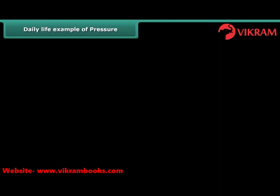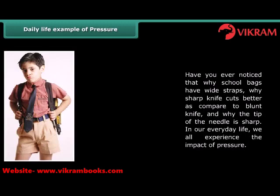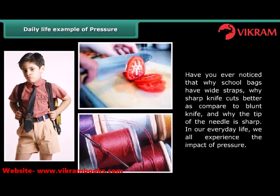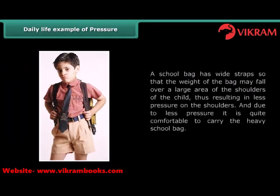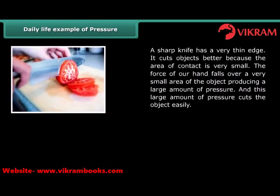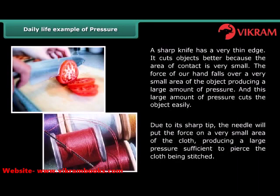Daily life examples of pressure. Have you ever noticed why school bags have wide straps? Why does a sharp knife cut better compared to a blunt knife? And why is the tip of a needle sharp? A school bag has wide straps so that the weight of the bag may fall over a large area of the shoulders, resulting in less pressure and making it comfortable to carry. A sharp knife has a very thin edge and cuts objects better because the area of contact is very small, producing a large amount of pressure that cuts the object easily. Similarly, due to its sharp tip, a needle puts force on a very small area of cloth, producing a large pressure sufficient to pierce the cloth being stitched.